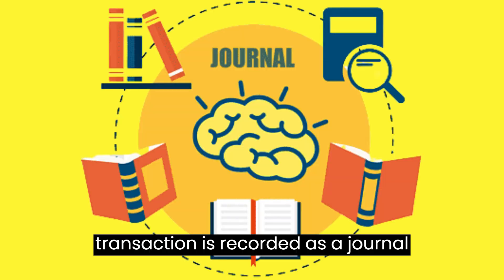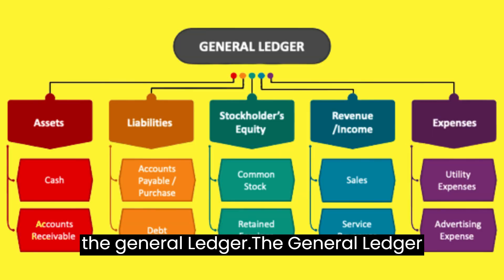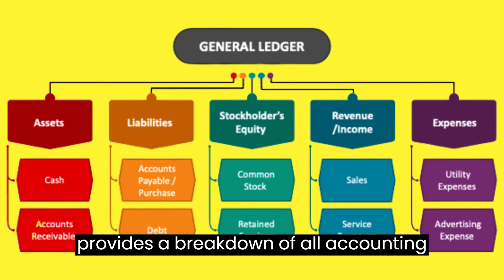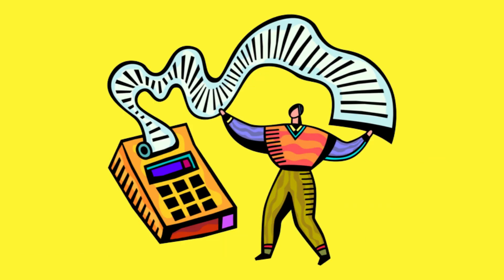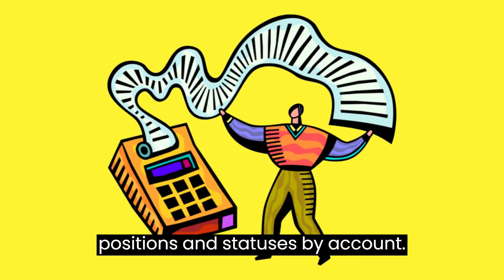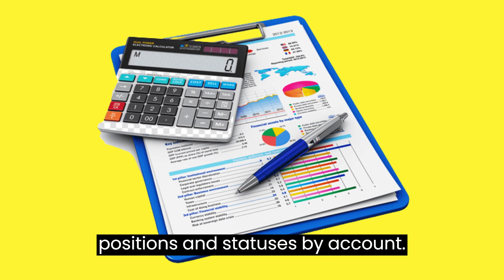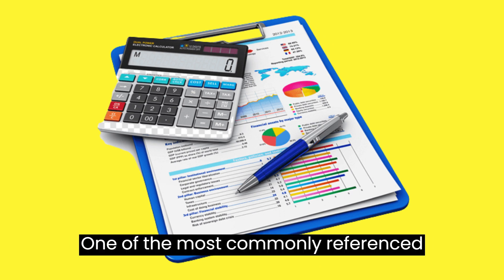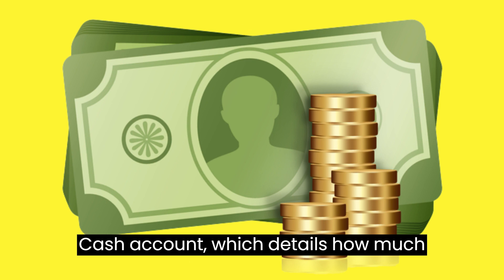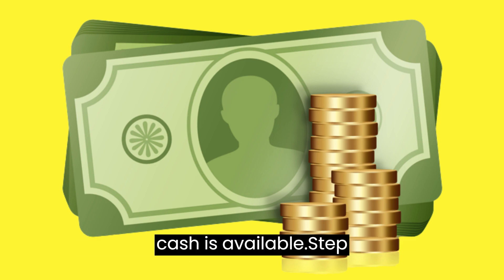Step 3: Posting. Once a transaction is recorded as a journal entry, it should post to an account in the general ledger. The general ledger provides a breakdown of all accounting activities by account. This allows a bookkeeper to monitor financial positions and statuses by account. One of the most commonly referenced accounts in the general ledger is the cash account, which details how much cash is available.